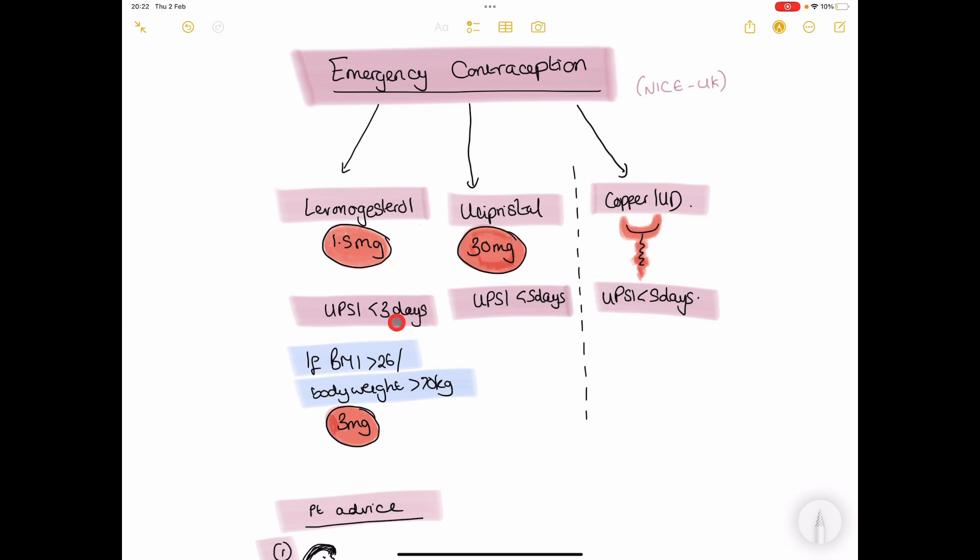If the patient has had unprotected sexual intercourse in the last three days, we can offer them levonorgestrel. If it's been less than five days, it's either an ulipristal dose or you can offer a copper IUD.